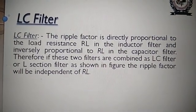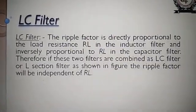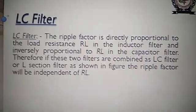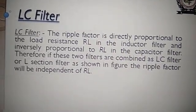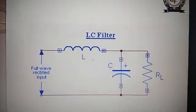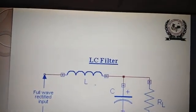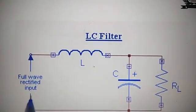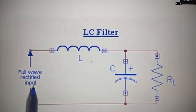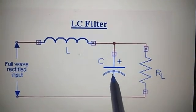Therefore, if these two filters are combined as an LC filter — also called an L-section filter — the ripple factor will be independent of load resistance. This is the LC filter circuit. Here, the full-wave rectifier output is given as input. This is the inductor — the choke — and this is the capacitor C.